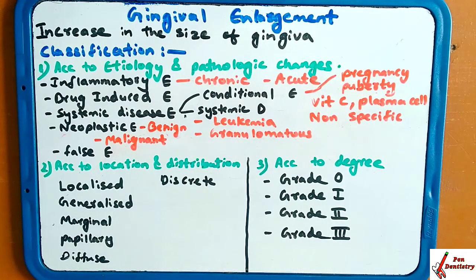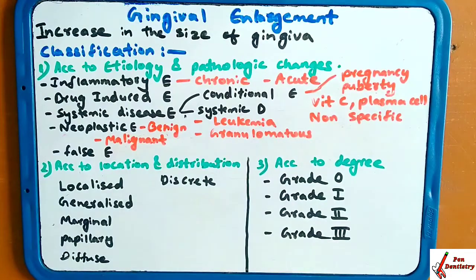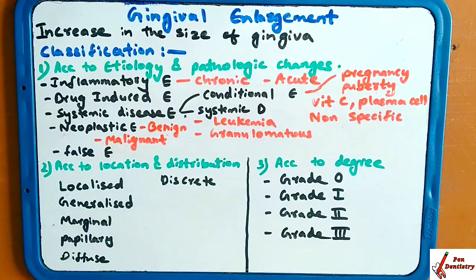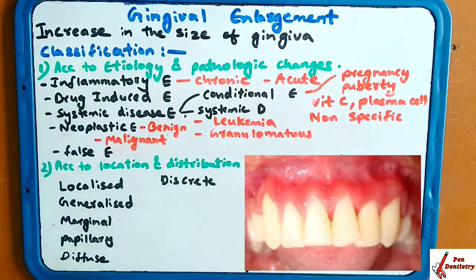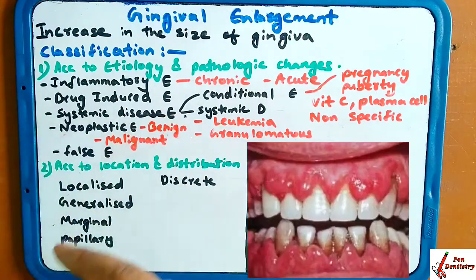Now we are going to learn about the classification of gingival enlargement. First, according to etiology and pathologic change — that is, on the basis of the cause and what changes take place. The first type is inflammatory enlargement, which may be chronic or acute, or drug-induced enlargement.